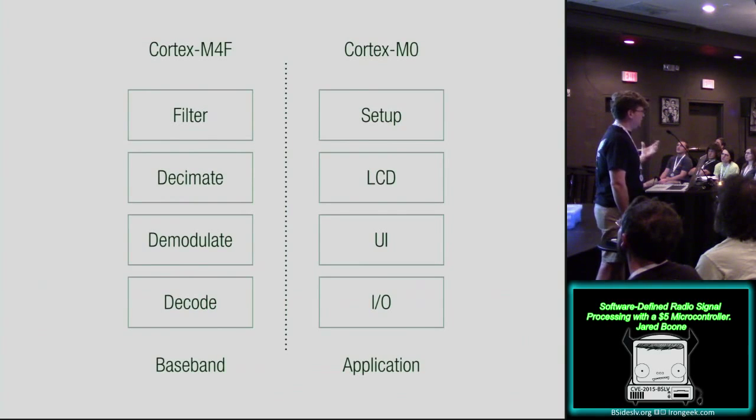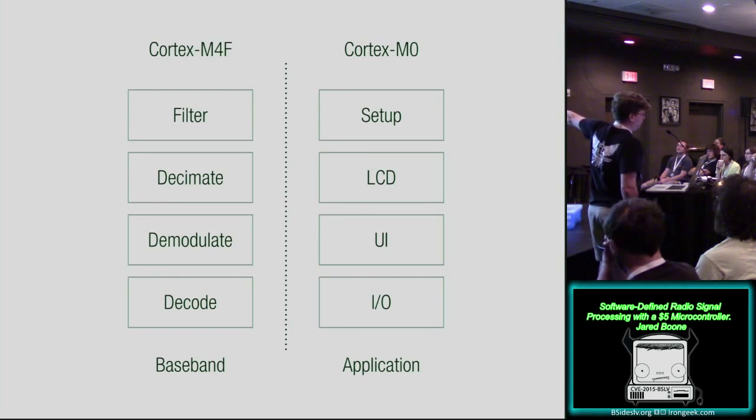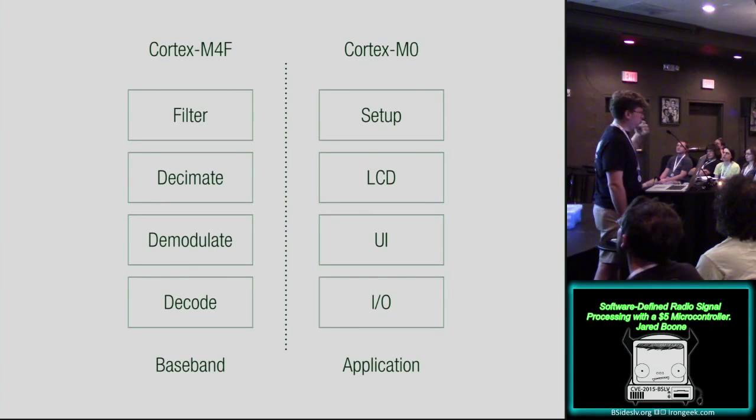So this is how I wound up breaking down the architecture of the device. Since we've got two processors, and one's really good at math and one really isn't, it seemed fitting to do all of the signal processing on the M4F on the left side here and to do all the user interface stuff on the left side. So the M0 sets up all the hardware, reads and writes to the LCD panel, renders the user interface, and then performs miscellaneous I/O to control the radios, set up the real-time clock, all that stuff. And then the M4F does the heavy lifting of receiving or sending samples to the radio portion of the hardware and all the signal processing involved in that.